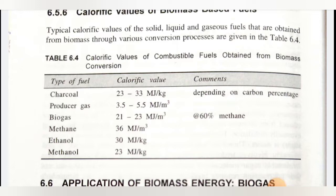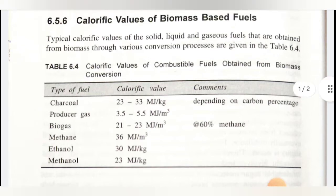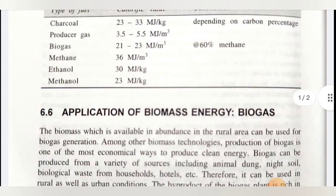The calorific values of solid, liquid, and gaseous biomass fuels will be different. The first biomass product is charcoal, with a calorific value of 23 to 33 megajoules per kg depending on the carbon percentage. Producer gas has a calorific value of 3.5 to 5.5 megajoules per cubic meter. Biogas is 21 to 23 megajoules per cubic meter at 60% methane. Methane, ethane, and methanol have calorific values of 36, 30, and 23 megajoules per cubic meter respectively. You should remember these values, as they are required when designing biogas systems.